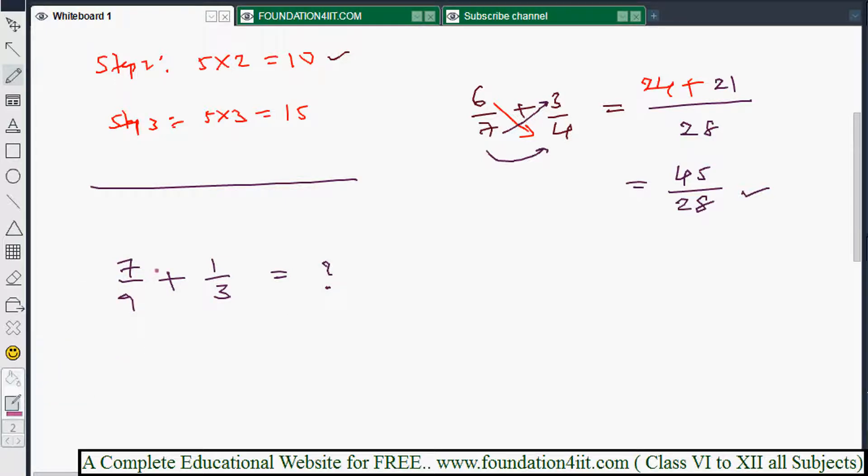7 by 9 plus 1 by 3. I'm taking cross multiplication - always first fraction numerator to second fraction denominator: 7 into 3 is 21. 9 into 1 is 9. Both denominators you multiply: 9 into 3 is 27.